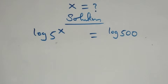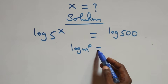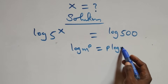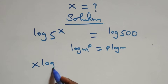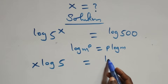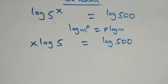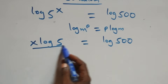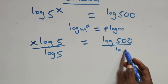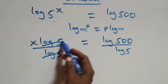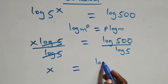We apply the power rule of logarithms: log m raised to power p is the same as p log m. So we have x log 5 equals log 500. Then we divide each side by log 5, and log 5 cancels, giving us x equals log 500 over log 5.